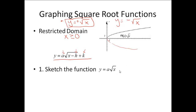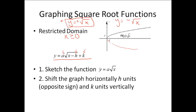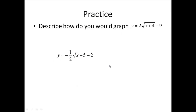The first thing we're going to do is sketch the corresponding function y equals a times the square root of x using a table of values. Once you have your table of values and your sketch done, you're going to shift that graph horizontally h units — remembering to use the opposite sign — and then k units vertically.